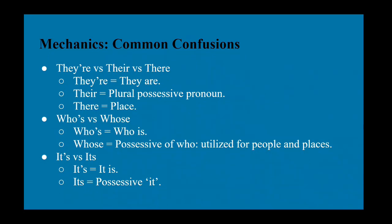There are many common confusions the ACT assesses: 'they're' (T-H-E-Y apostrophe R-E) means 'they are'; 'their' (T-H-E-I-R) is the plural possessive pronoun, as in 'I like their music'; and 'there' (T-H-E-R-E) is a place, as in 'I like to go there.' Then there's 'whose' versus 'who's' — 'who's' with an apostrophe means 'who is,' while 'whose' (W-H-O-S-E) is the possessive of who, as in 'whose jacket is this?' Also, 'it's' (I-T apostrophe S) means 'it is,' while 'its' (I-T-S) is the possessive of it.